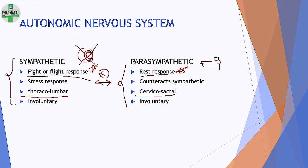The point of similarity between sympathetic and parasympathetic is that both are involuntary — you don't have to tell sympathetic to counteract the parasympathetic; they do it on their own.